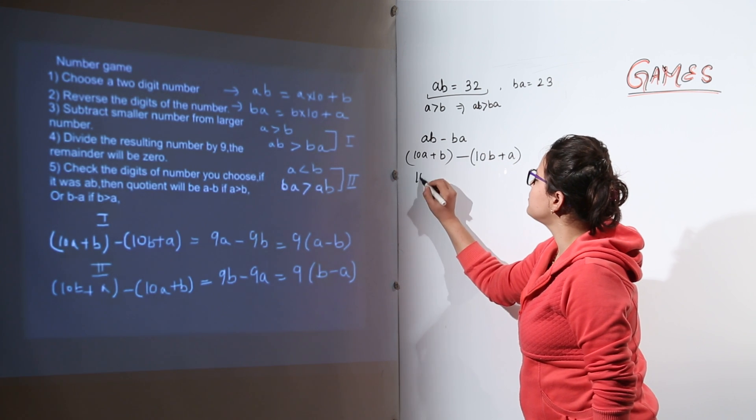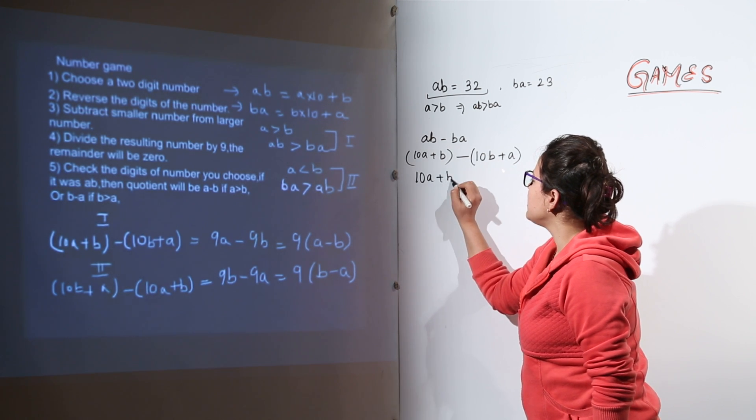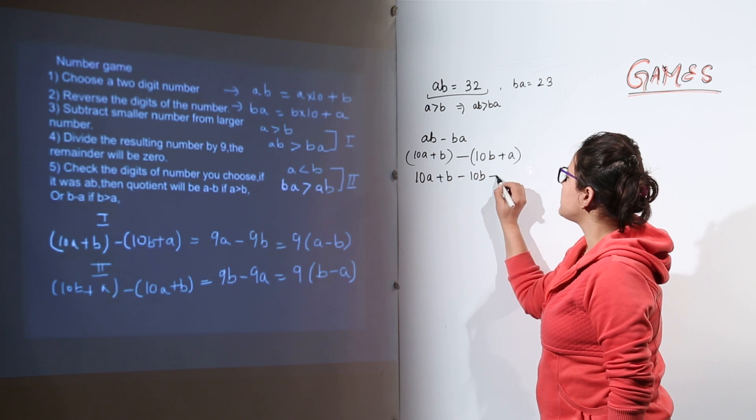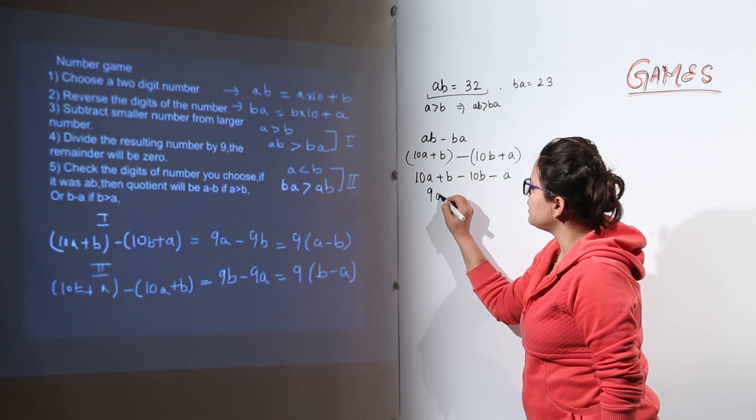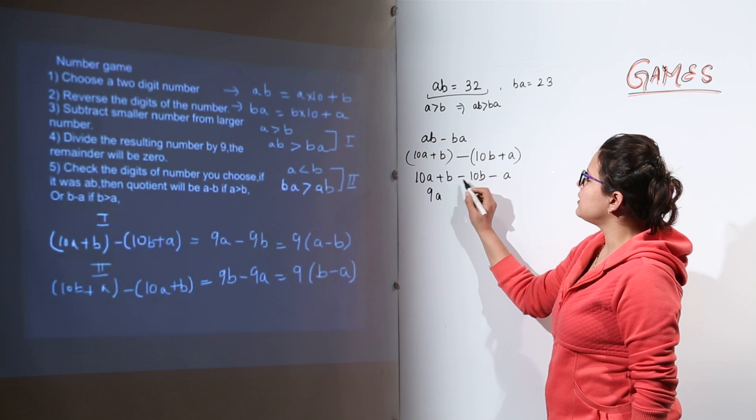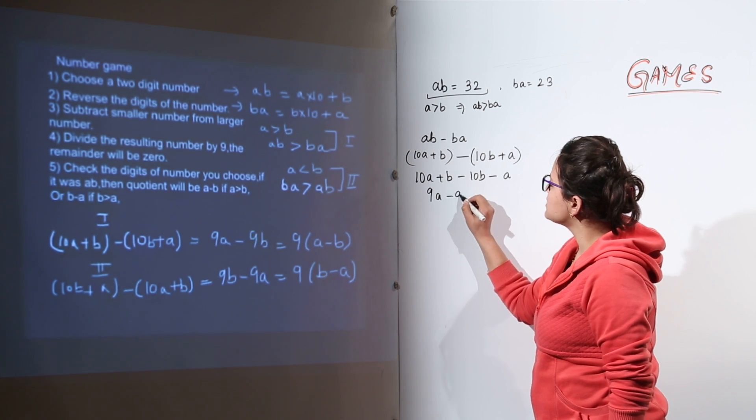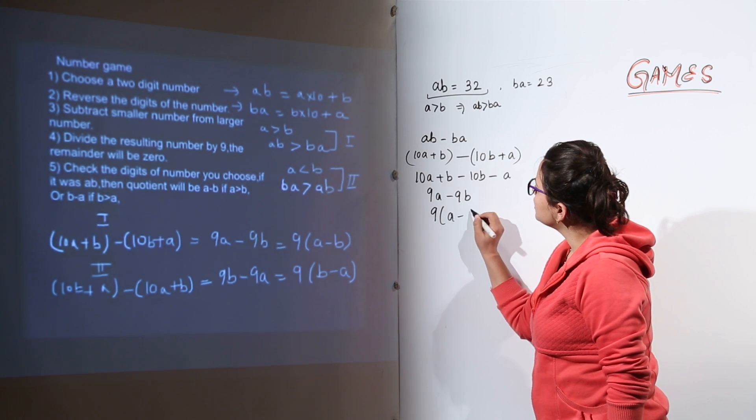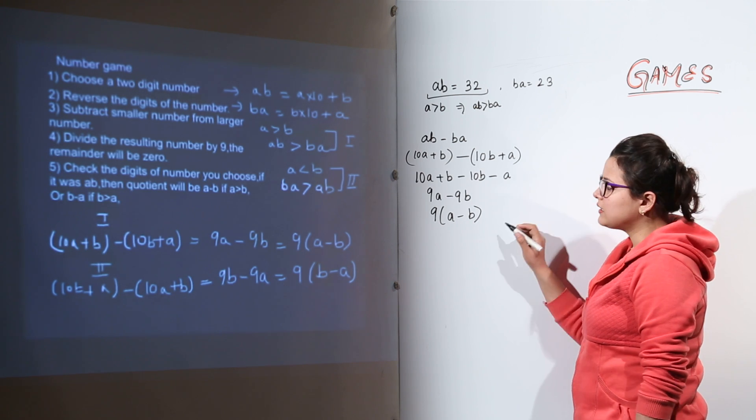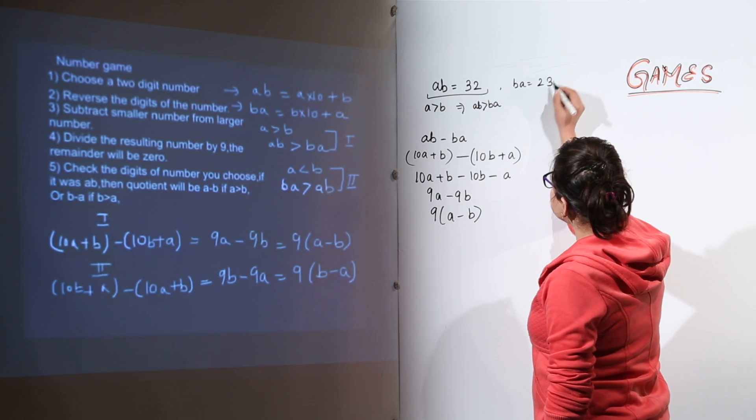Now solving it further we get 10A plus B minus 10B minus A. Now you get 10A minus A as 9A and minus 10B plus B as minus 9B. Over here you take out the 9 common you get 9(A minus B). That is the case if this was done.